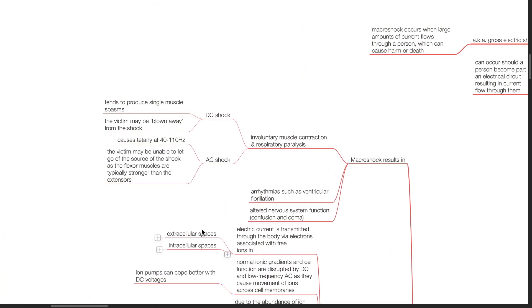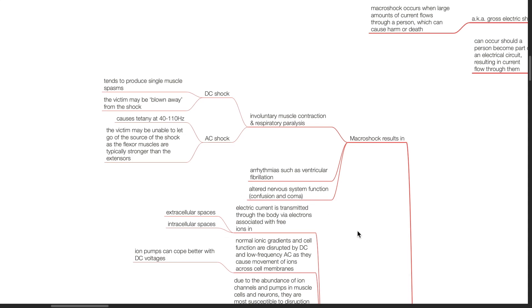Macroshock results in involuntary muscle contraction and respiratory paralysis. For DC shock, these tend to produce single muscle spasms. The victim may be blown away from the shock. For AC shock, they tend to cause tetany at 40 to 110 Hz. The victim may be unable to let go of the source of shock, as the flexor muscles are typically stronger than the extensors. Arrhythmias may occur such as ventricular fibrillation. Altered nervous system function may result in confusion and coma.